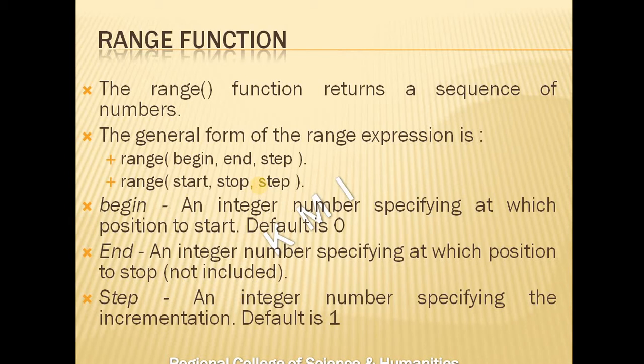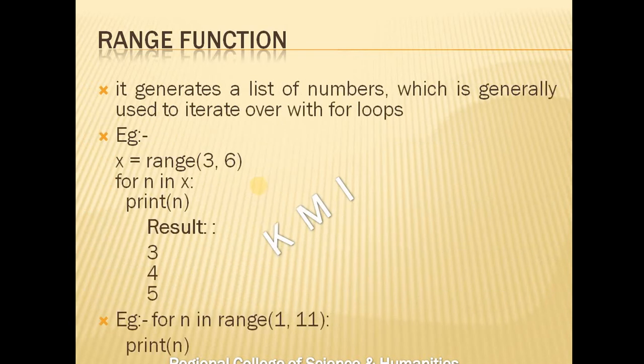If you want an increment, you can specify it. The step value defaults to 1. So the parameters are start, stop, and step — also referred to as begin, end, and step. These are the range function's particular settings.